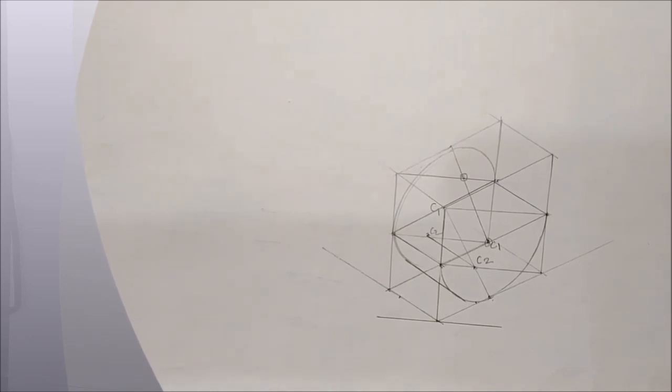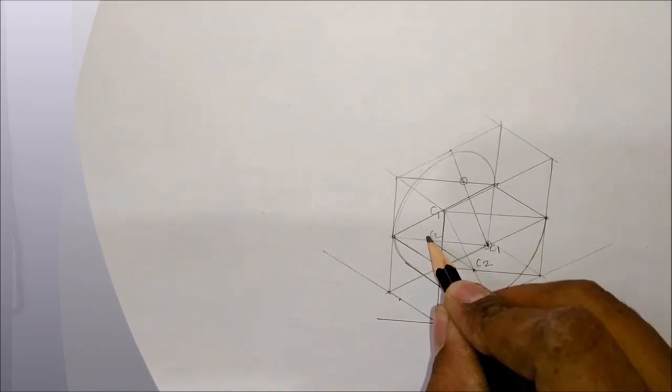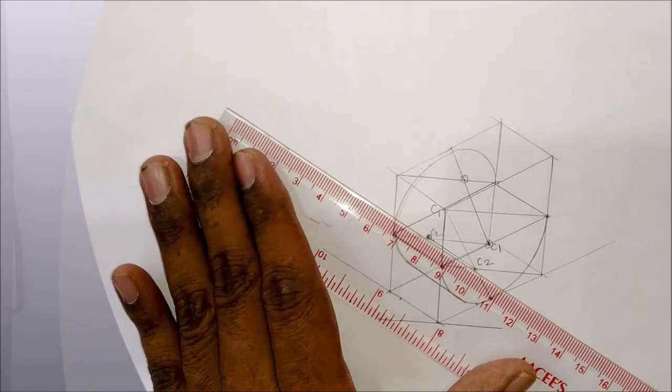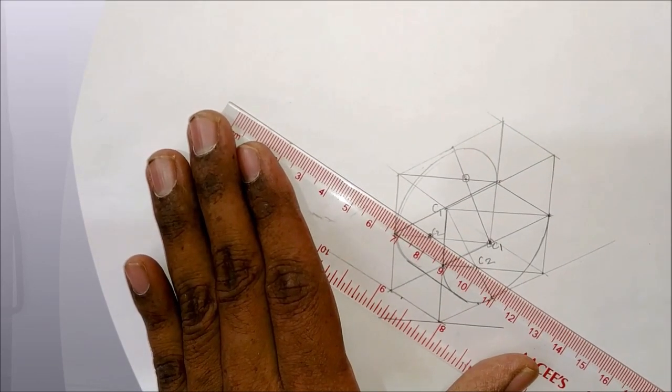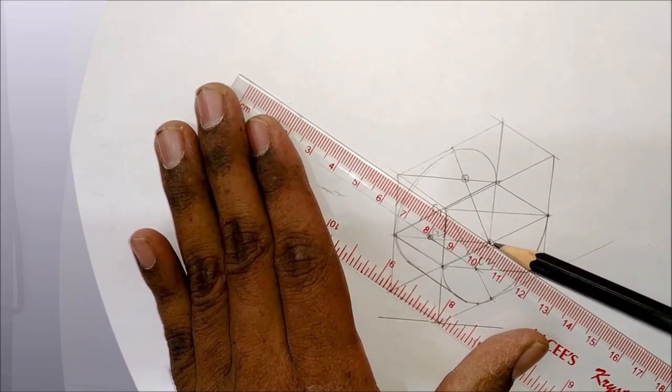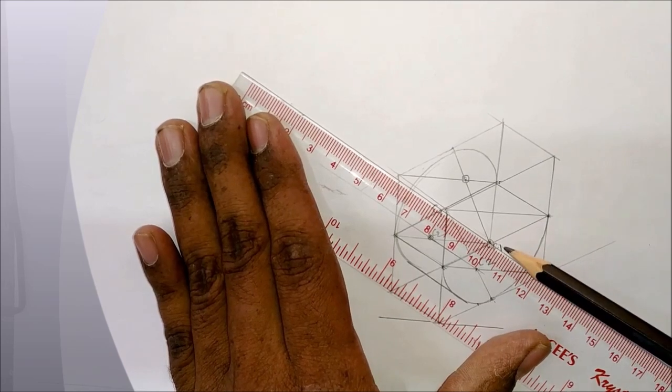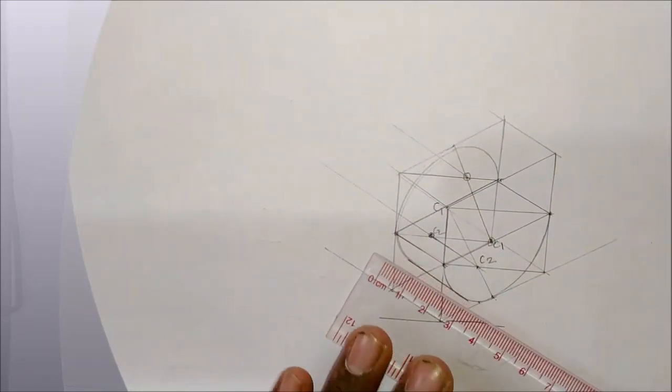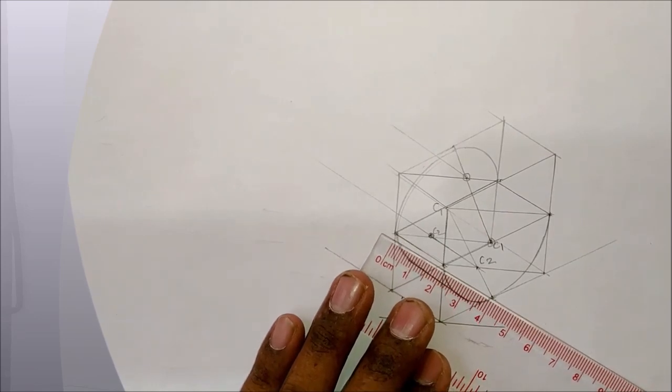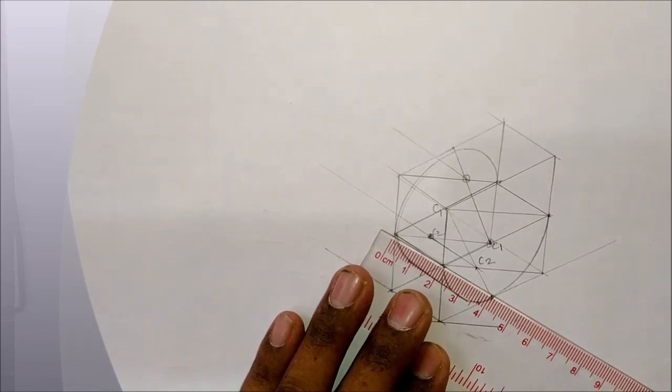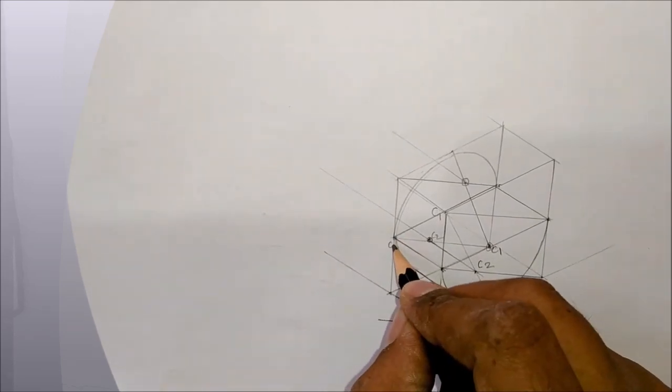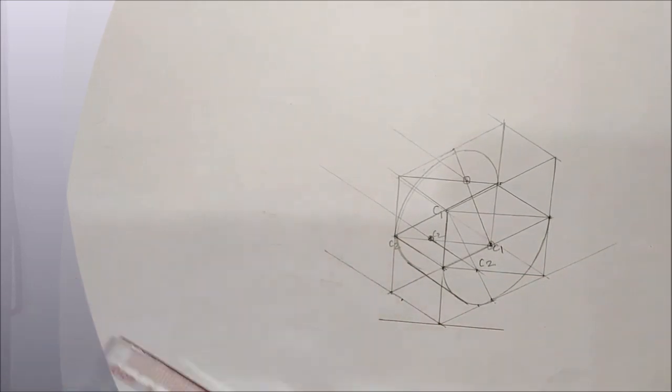Now again we will shift this center's backside to get this same semicircular portion again at the 20mm behind. So these three centers will shift 20mm behind with the help of isometric axis in that given direction by 20mm. All the centers are going to be shifted 20mm behind.